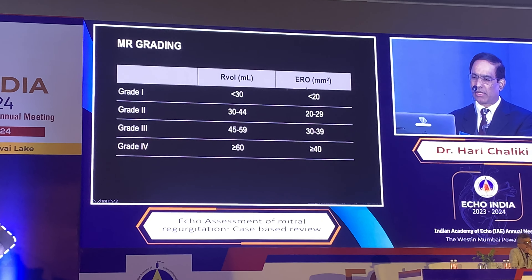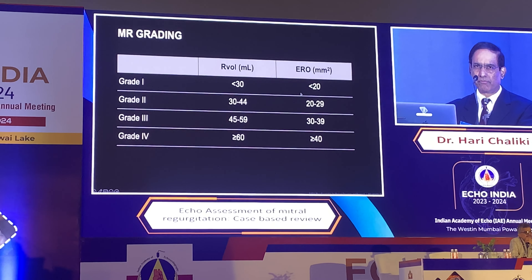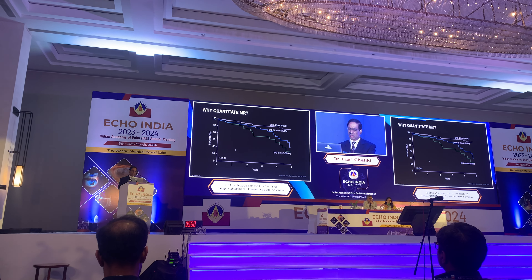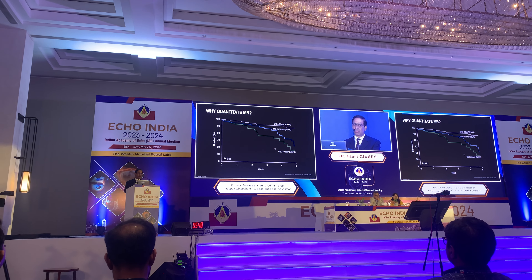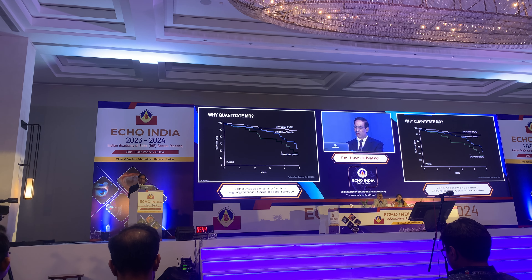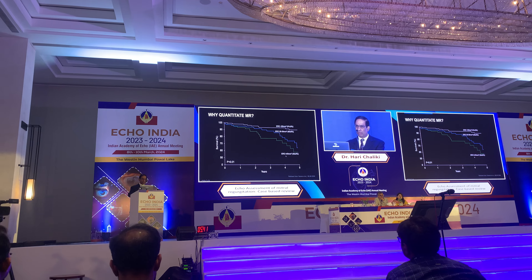Severe grade 4 MR is defined as regurgitation volume more than 60 mL and ERO more than 0.4 cm² (40 mm²). Less than 10 mL is mild and ERO less than 20 mm² is mild. Why quantify rather than use a rough estimate? Because this was published in the New England Journal by my mentor Dr. Serrano at Rochester, showing that survival and prognosis depend on the quantitative ERO — those with ERO more than 0.4 have significantly worse prognosis over time.